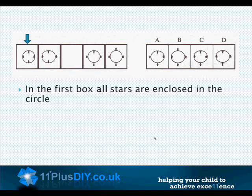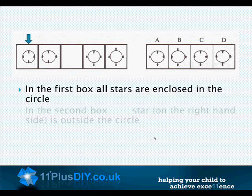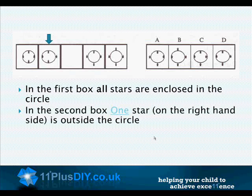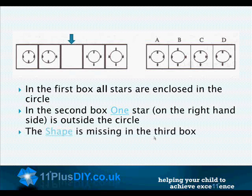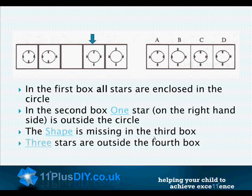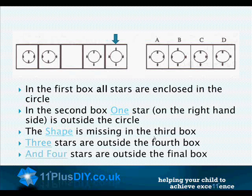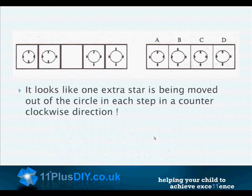In the first box, all the stars are enclosed in the circle. In the second box, one star on the right hand side is outside the circle. The shape is missing in the third box. Three stars are outside the fourth box, and all four stars are outside the final box. It looks like one extra star is being moved out of the circle in each step in a counter-clockwise direction.